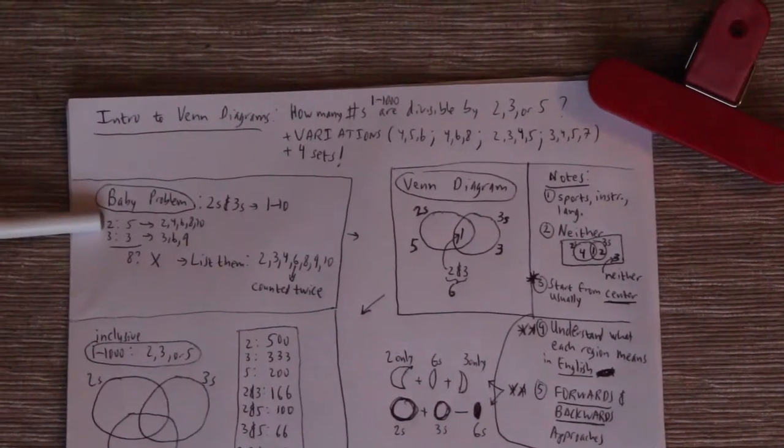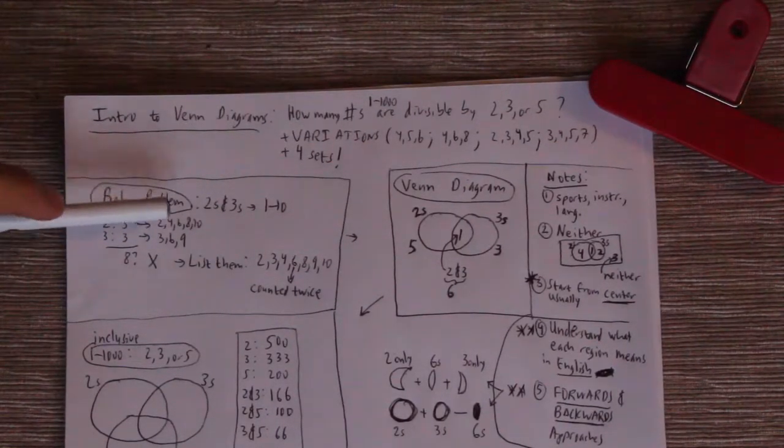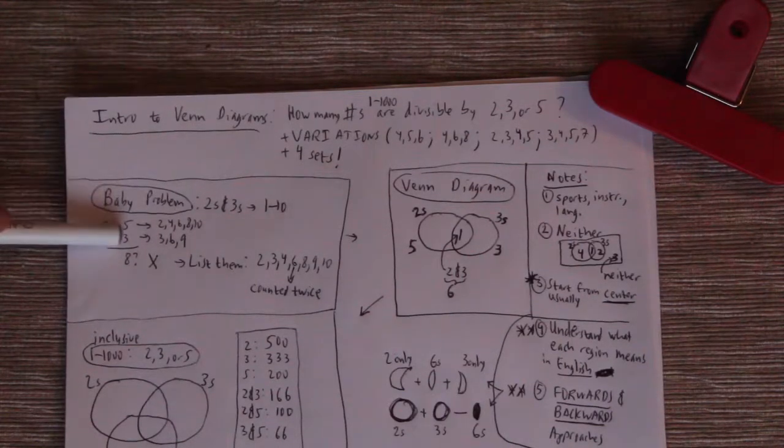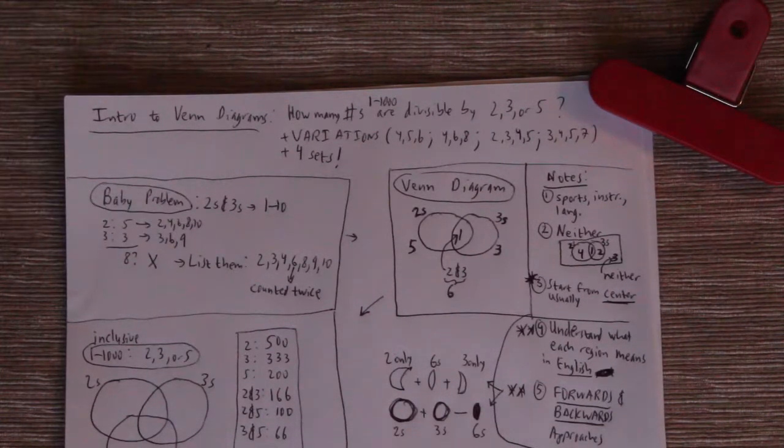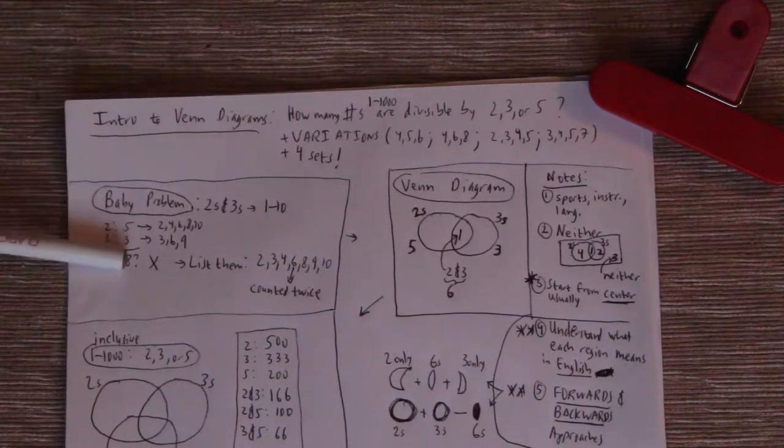We can say how many numbers are divisible by 2. Well, there are 5 of them. We can even list them out. There's 2, 4, 6, 8, and 10. We can see how many numbers are divisible by 3. There's 3 of them and those are 3, 6, and 9. So there's 5 of those, there's 3 of these, let's add them up and get 8.